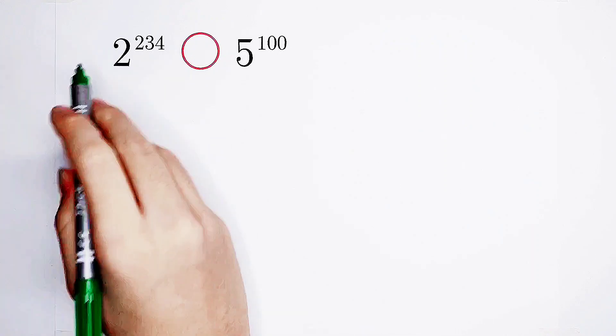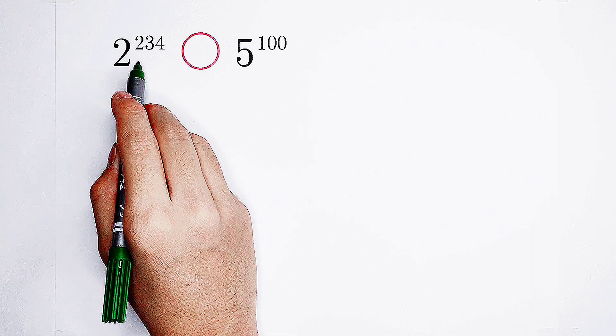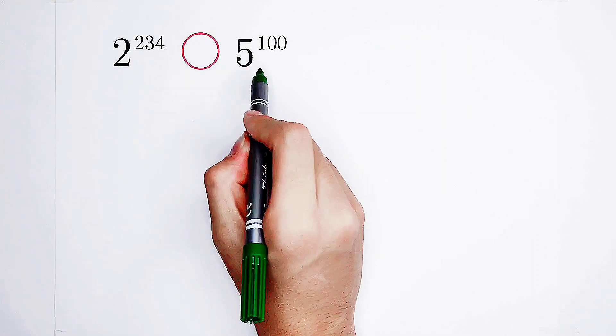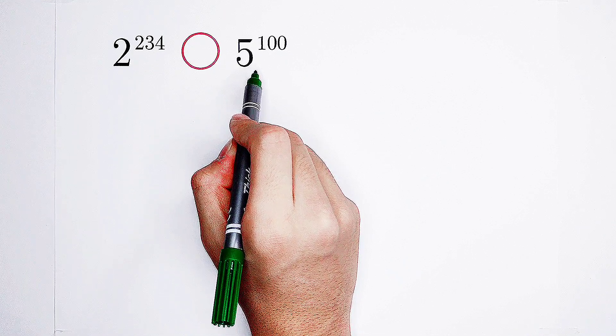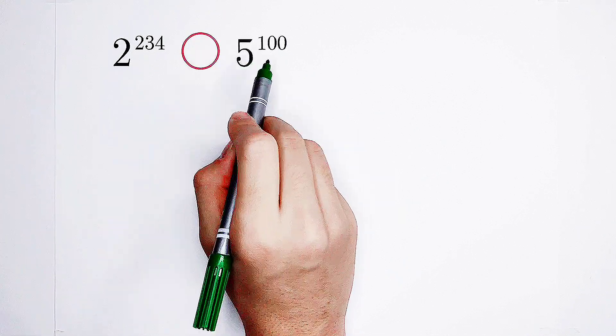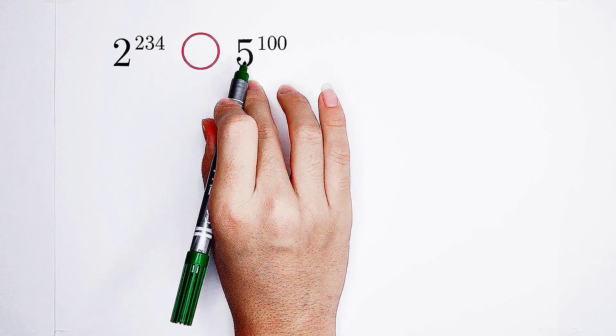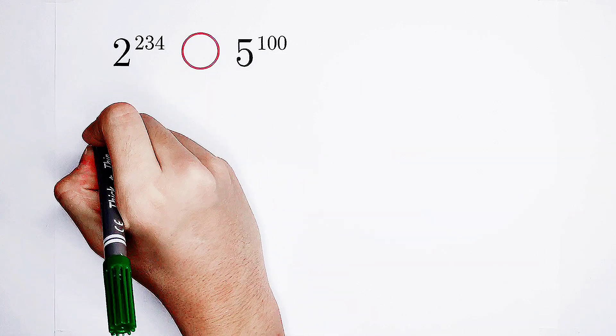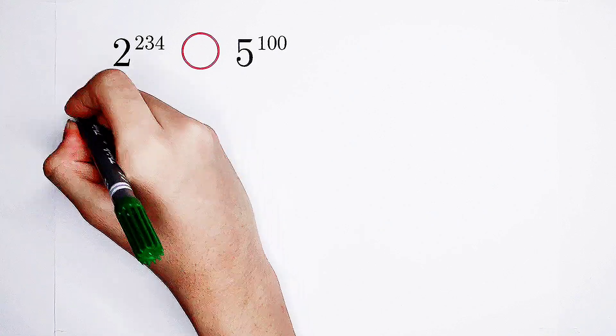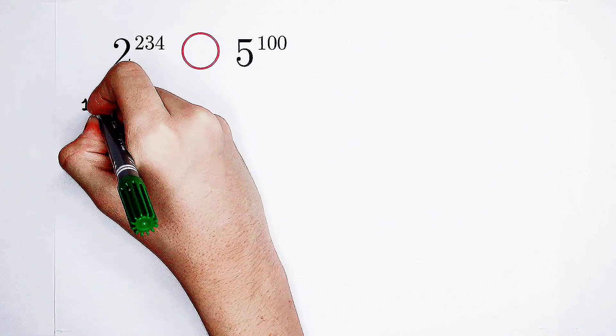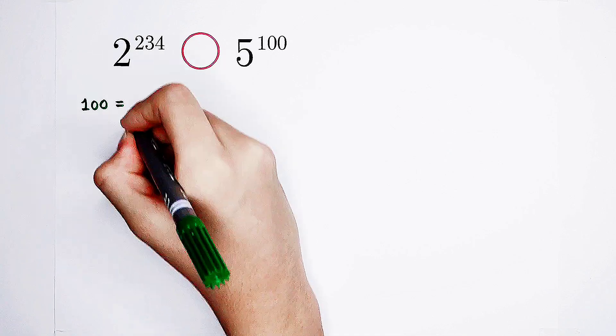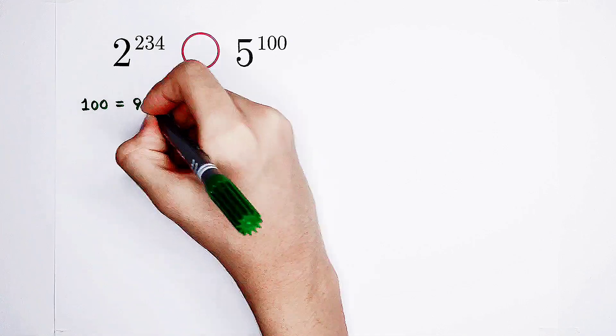So now, this exponent is a multiple of 3. However, 100 not. So I'm going to do something on this 100, on our second exponent. 5 to the power of 100.